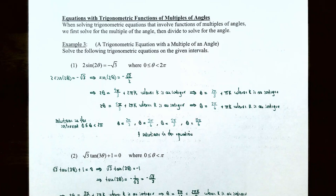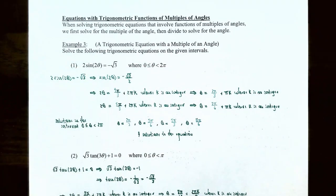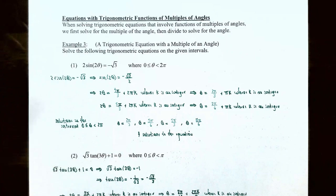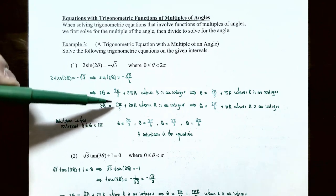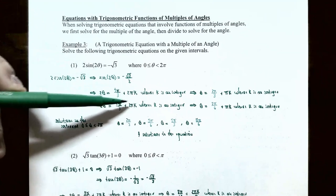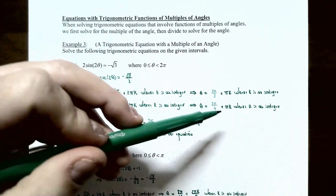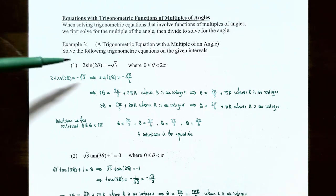Now divide both sides by two to solve for theta. Four pi over three divided by two gives two pi over three, and two pi k divided by two gives pi k. So theta equals two pi over three plus pi k. Similarly, five pi over three divided by two gives five pi over six plus pi k. So the general solutions are theta equals two pi over three plus pi k, and theta equals five pi over six plus pi k, where k is an integer.